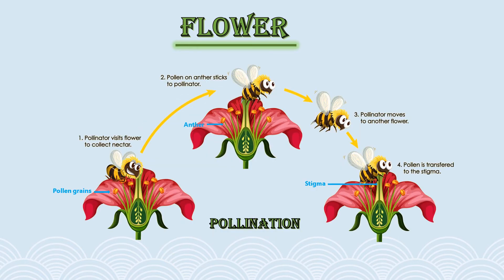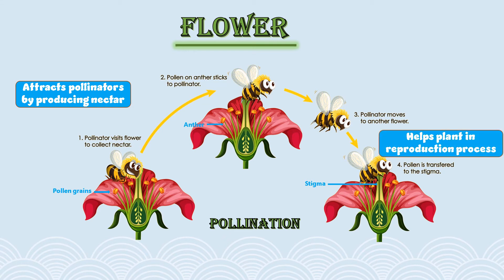Let's understand the importance of a flower in a plant. The main function of a flower is reproduction. Flower produces a sugar-rich liquid called nectar that attracts pollinators like bees. Once a pollinator comes to the flower and sits on it to collect nectar, the pollen on the anther sticks to the pollinator. As the pollinator moves to another flower, the pollen grain is transferred to the stigma, where seeds are formed for reproduction.